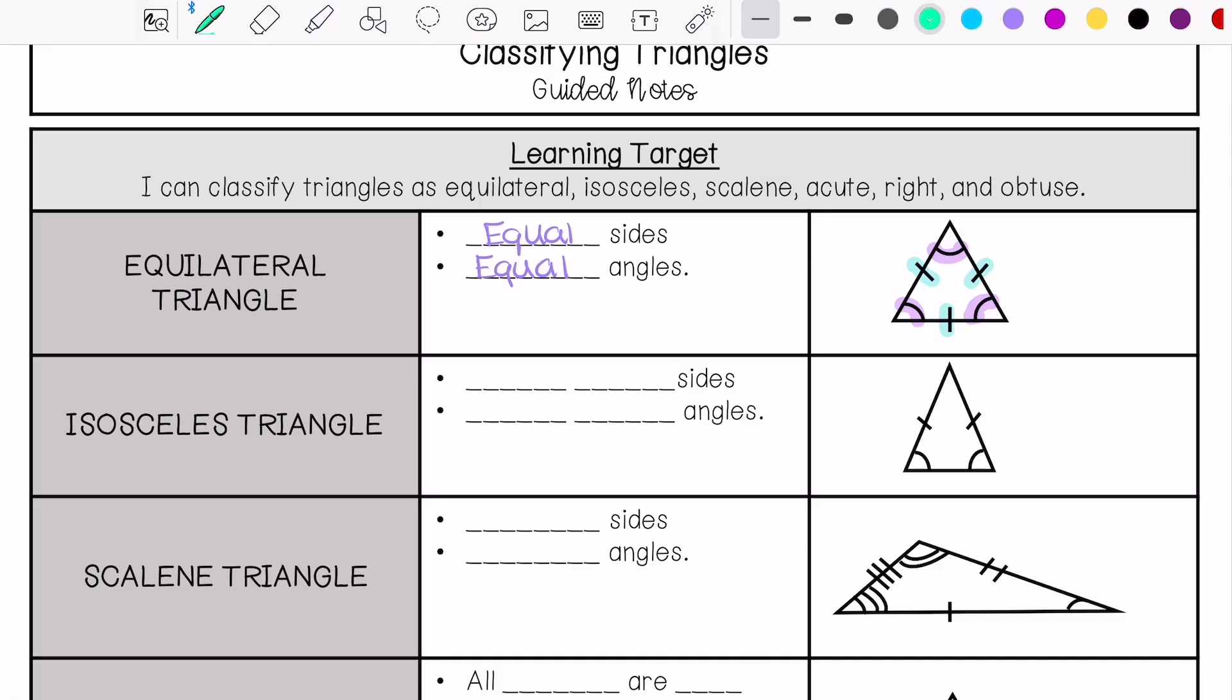Isosceles triangles have two equal sides and two equal angles. These two sides are congruent, equal, and these two angles are equal or congruent.